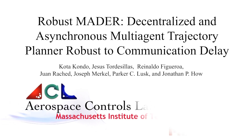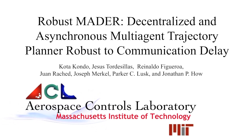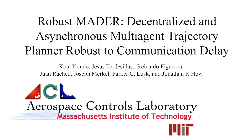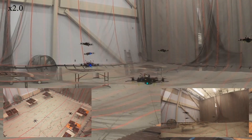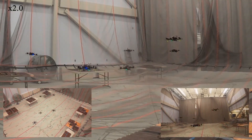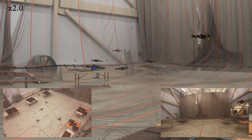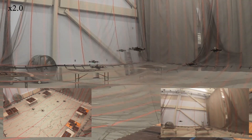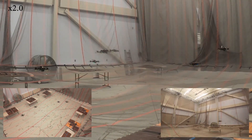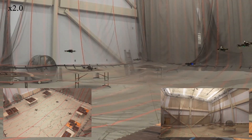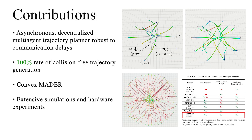RobustMator is a decentralized and asynchronous multi-agent trajectory planner that is robust to communication delay. RobustMator is the first multi-agent trajectory planner that is asynchronous, decentralized, and robust to communication delays.